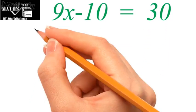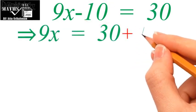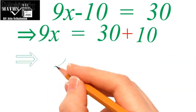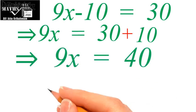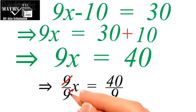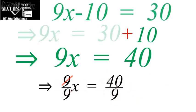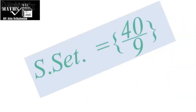This is the linear equation 9x minus 10 equal to 30. Our first job is to transfer the constant minus 10 from left to right, so it becomes 9x equal to 10 plus 30. Simplifying this gives 9x equal to 40. Now dividing each side by 9 to get the required value of x: the root is x equal to 40 upon 9. Finally tabulating this value in the brackets gives the solution set of the given linear equation.